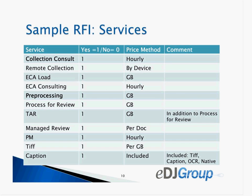For folks who haven't necessarily done this process this way, this is what a really simple RFI looks like related to services. You list all the services that interest you. You ask them to give you a one for yes, a zero for no. This is in Excel — I believe Excel is the secret to all procurement happiness. And you ask them to respond about how they price things.